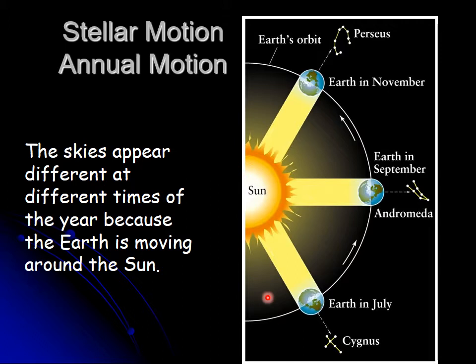Every day the sky shifts by a little bit, meaning the rising and setting of the stars shifts by a little bit. By how much? It takes 365 days to go all the way around, and there are 360 degrees in a complete circle, so it goes almost one degree per day. It takes 24 hours to rotate 360 degrees, so 360 divided by 24 means Earth rotates 15 degrees per hour. An hour is 60 minutes, so it takes Earth about four minutes to rotate one degree — meaning it's about four minutes a day.